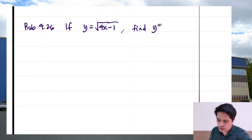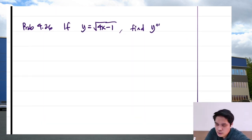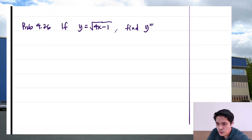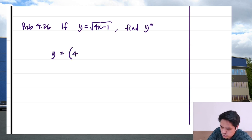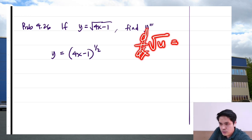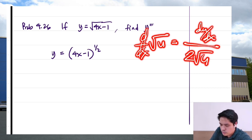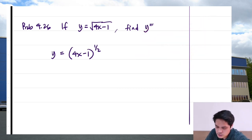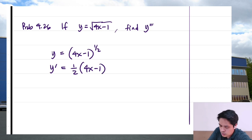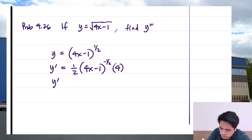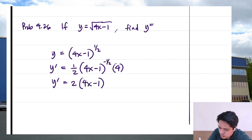Let's try another one. If y = √(4x − 1), find y triple prime. We need y prime first. Rewriting as y = (4x − 1)^(1/2) and applying the chain rule: y prime = (1/2)(4x − 1)^(−1/2) times 4, which gives y prime = 2(4x − 1)^(−1/2).